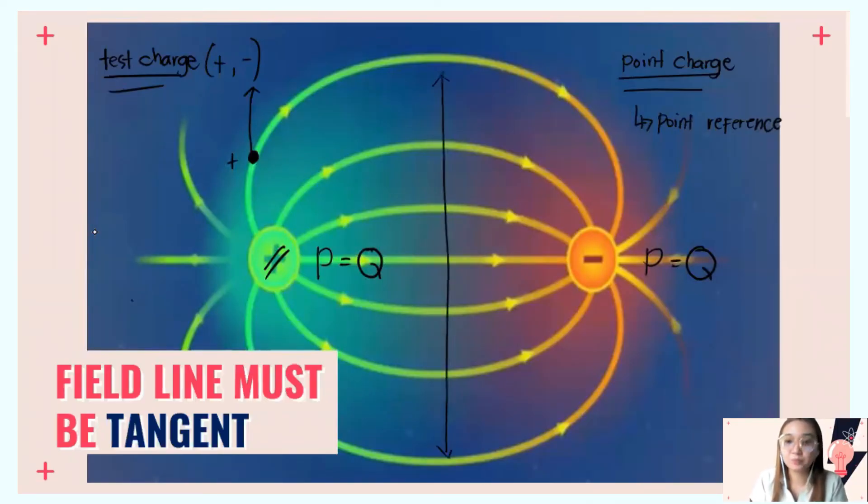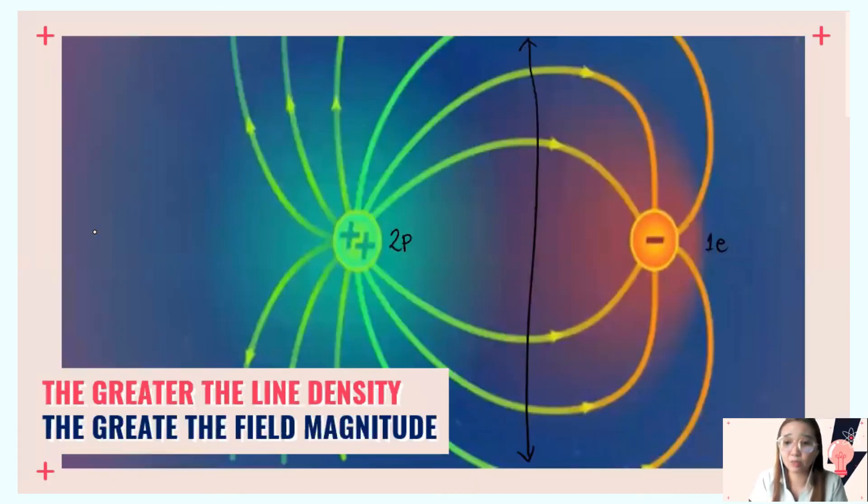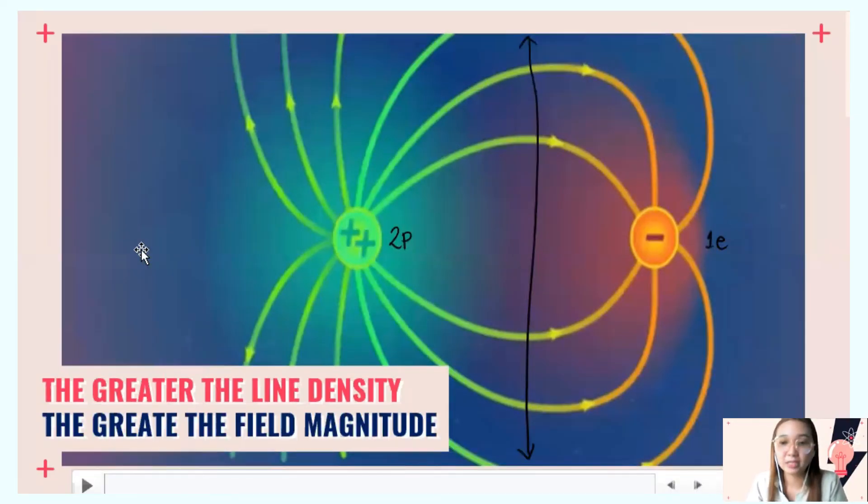Compared to this example where there's just one negative and one positive, the diameter is smaller. In the second example, the lines increased because the charges increased, so the diameter of the electric field is greater.